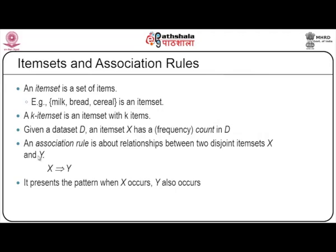Item sets are a set of items such as bread, milk and cereals combined together. If listed as a K item set, it means an item set with K items. Given a dataset D, an item set X has a frequency count in D — that is, the number of times a particular item set appears in the entire dataset.